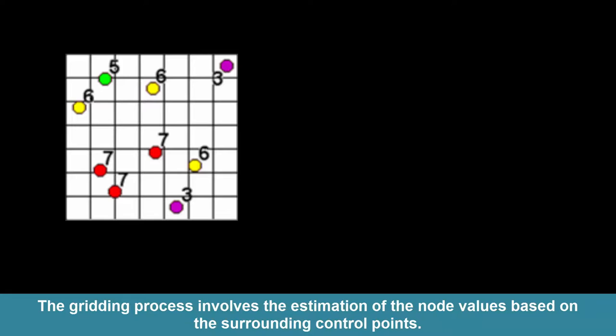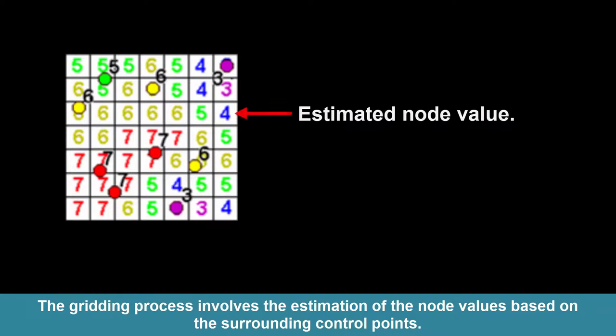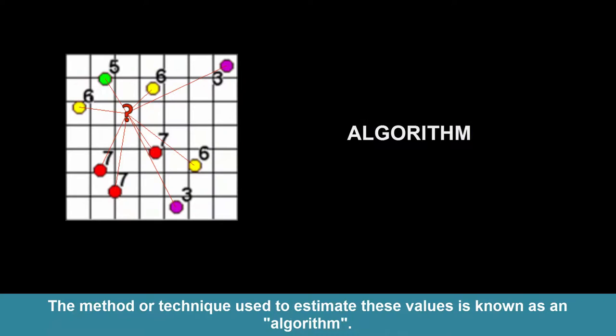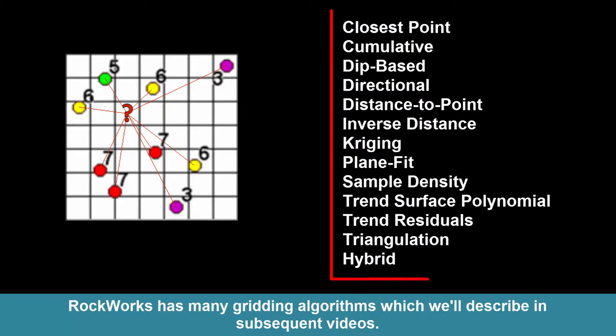The gridding process involves the estimation of the node values based on the surrounding control points. The method or technique used to estimate these values is known as an algorithm. Rockworks has many gridding algorithms, which we'll describe in subsequent videos.